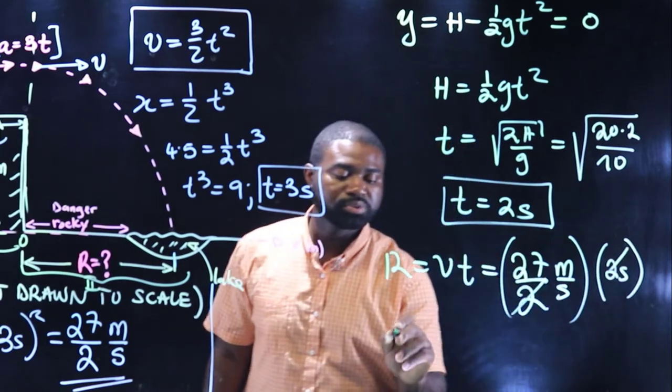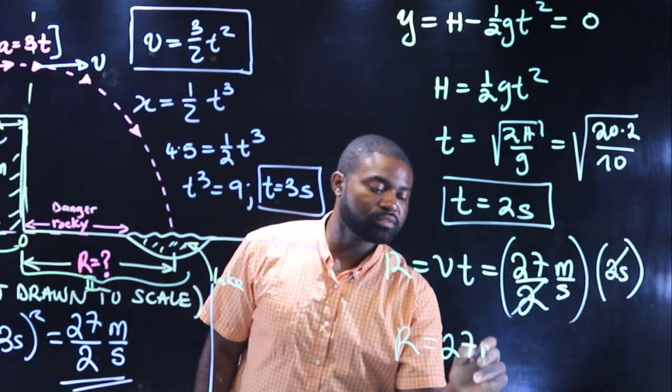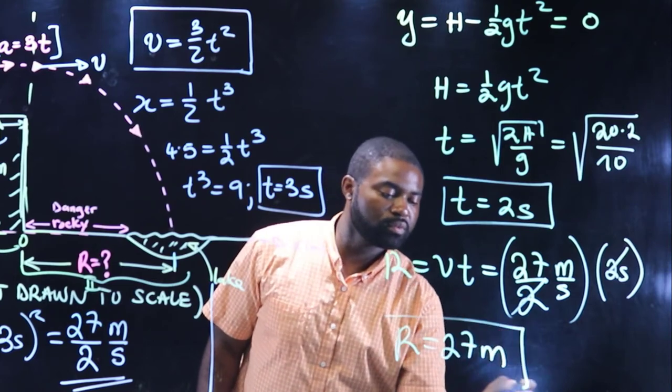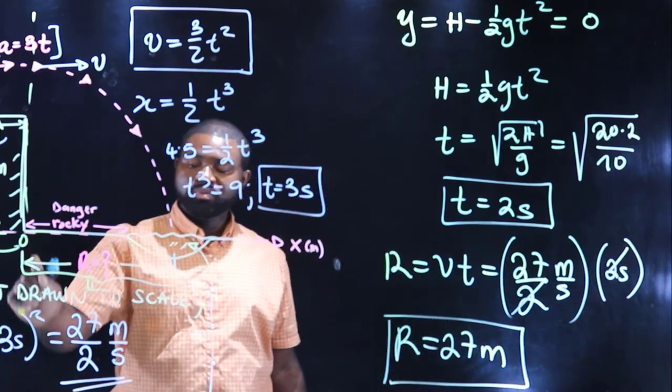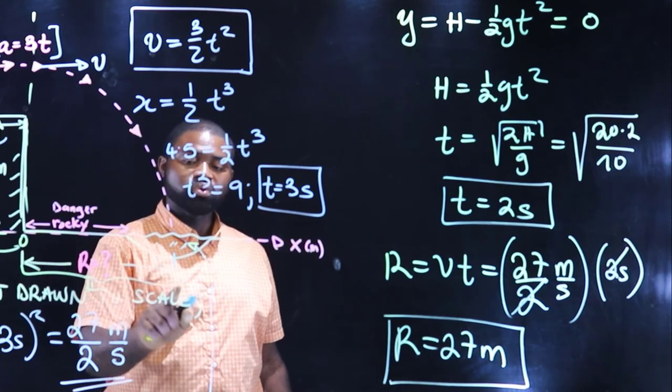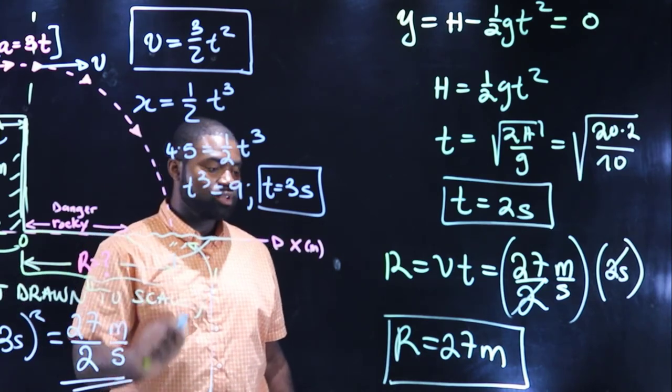The two cancels the two, and R is equal to 27 meters. And that is the distance from the foot of the cliff to where John hits the lake.